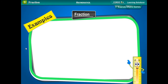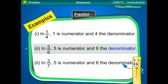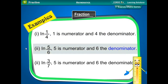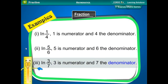Examples: In 1 upon 4, 1 is the numerator and 4 is the denominator. In 5 upon 6, 5 is the numerator and 6 is the denominator. In 3 upon 7, 3 is the numerator and 7 is the denominator.